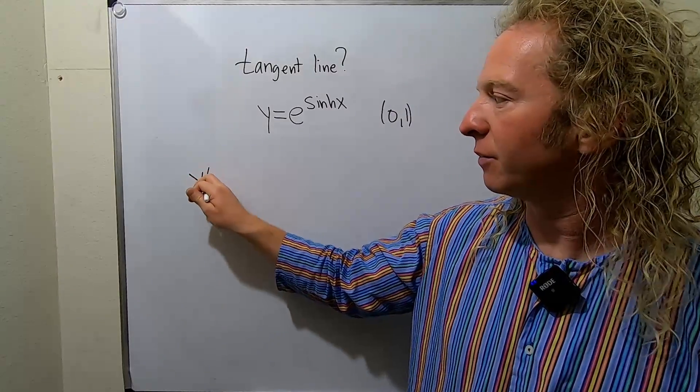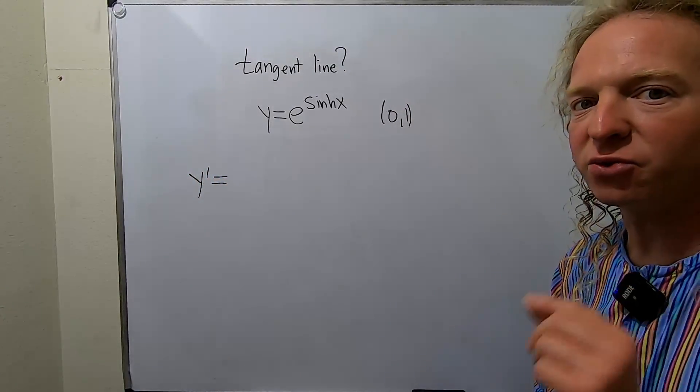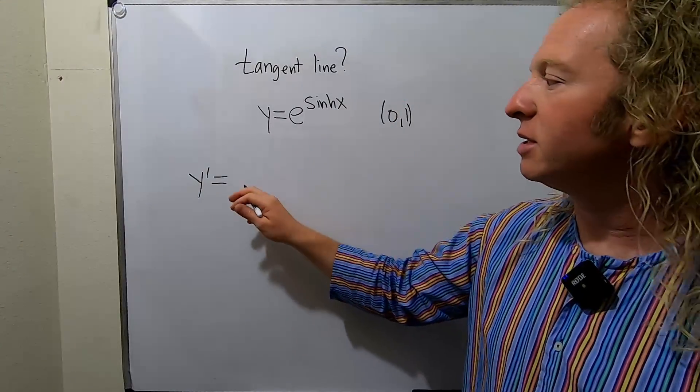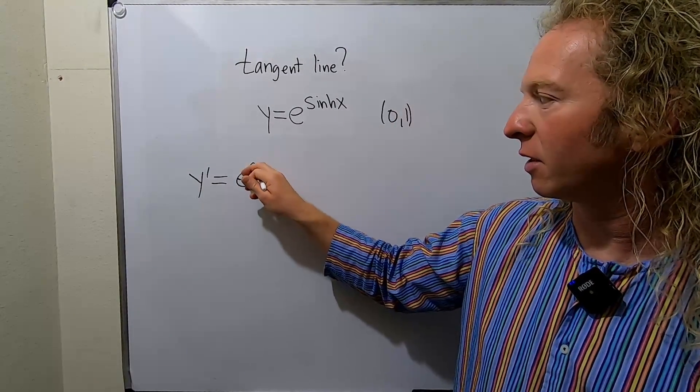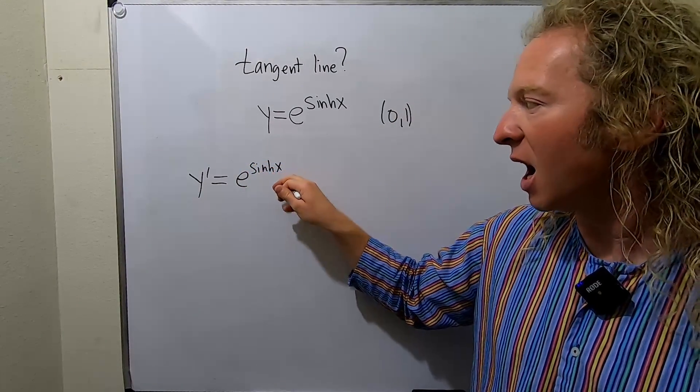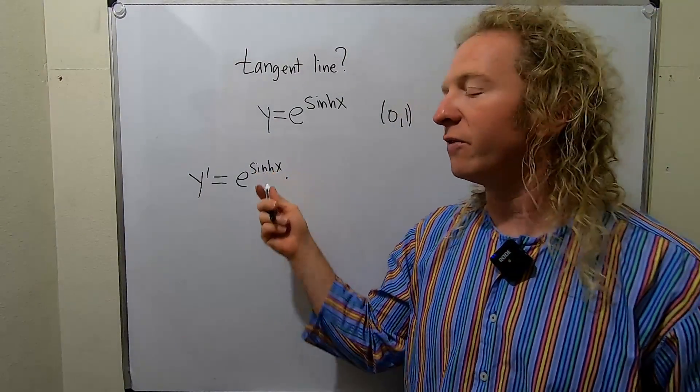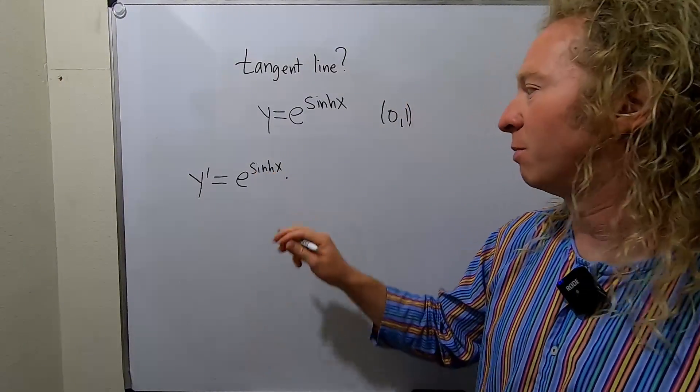So y prime—recall that the derivative of e^x is simply e^x. So here it's e^(sinh x), and then times the chain rule, the derivative of the inside function. The derivative of sinh is cosh. Beautiful problem. I like this problem because it looks hard, but it's not. It's really easy.